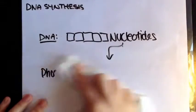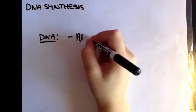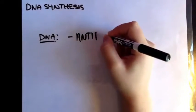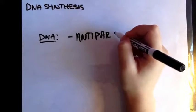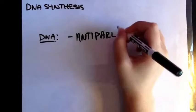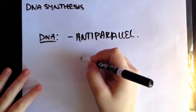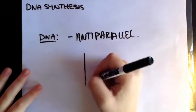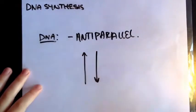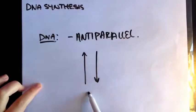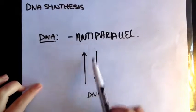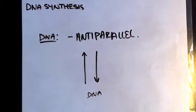Now that you know that, let's move further and understand that DNA is anti-parallel. Anti-parallel means that if you have a strand moving in one direction, the other one is going to be moving in the opposite direction. So if this is my DNA, one strand is going to be moving this way and one is going to be moving down.